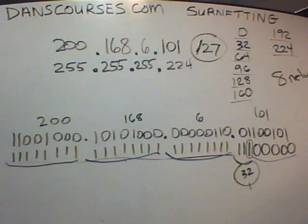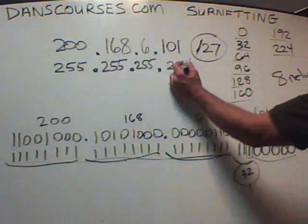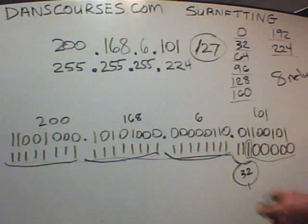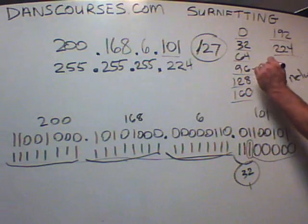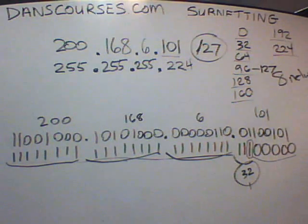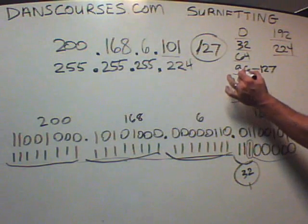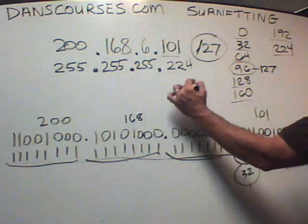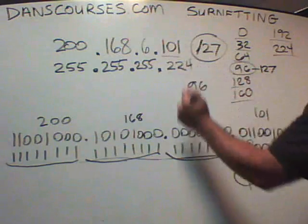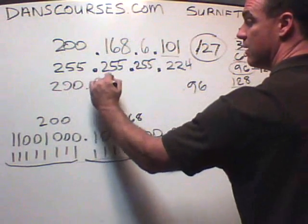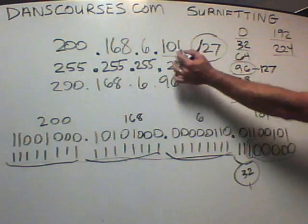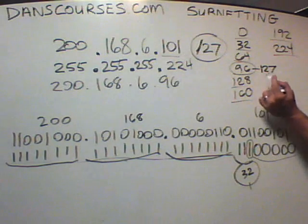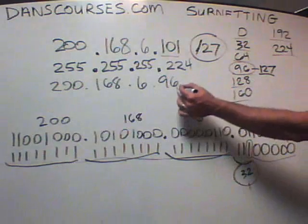Why does this help in the Cisco CCNA? Because in the CCNA, they're going to ask you: what network is .101 in? What network does .101 belong in? Well, 96 to 127 — the next network is 128, and this network is 96 — so .101 belongs in the .96 network. It's in the 200.168.6.96 network because 101 falls between 96 and 127.